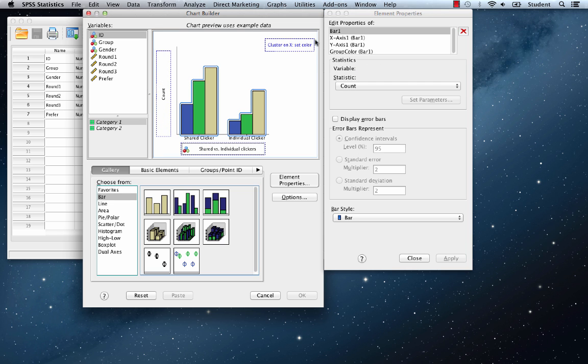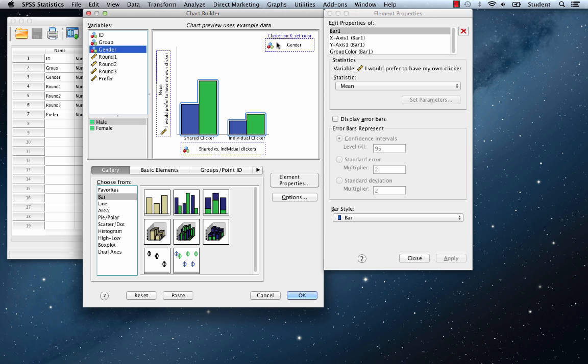Let's drag the clustered bar chart directly on top of our previous analysis. We now see that it has added a new drop zone called cluster on X set color. We have our groups set as shared and individual, but we are looking for prefer. We're going to need to drag that to the y-axis where it currently says count to change that. Now for the cluster on X set color, that's where gender is going to go. We're going to subdivide by gender.